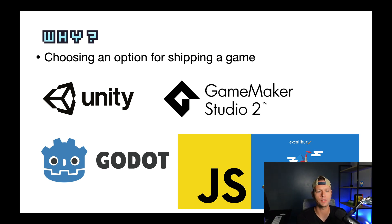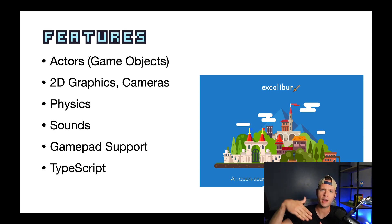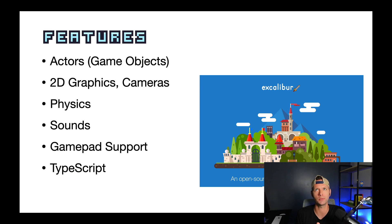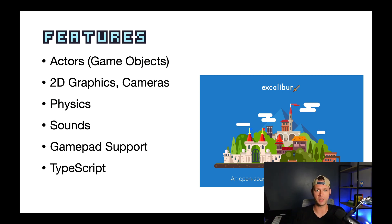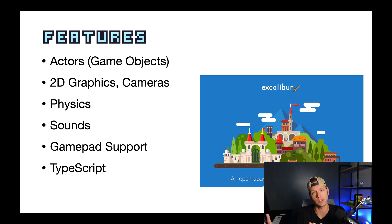Excalibur comes with a really strong concept of an actor — or game object. It gives you 2D graphics support, a really nice camera system, sounds, and gamepad support. The big thing I think is physics: if your game involves gravity or collisions, you could try rolling your own, but there's a lot to get wrong. Excalibur's physics system is really nice and easy to use. And finally, TypeScript support — everything is typed so well that autocomplete just takes care of itself. It could even be a nice intro guide to working with TypeScript.